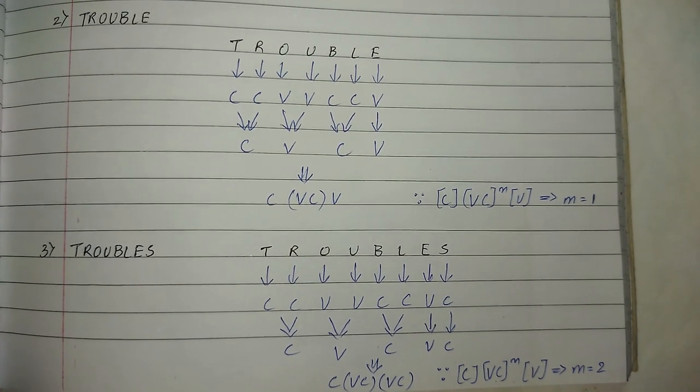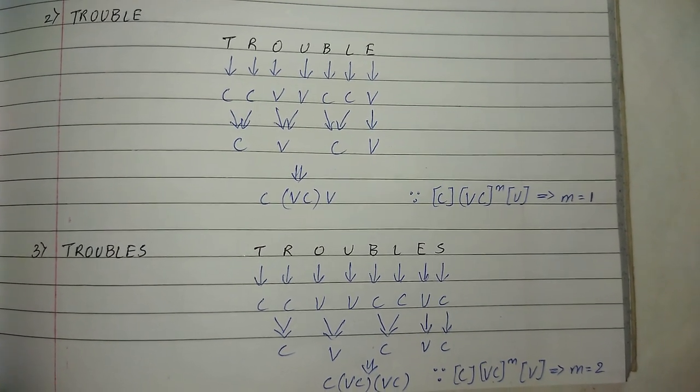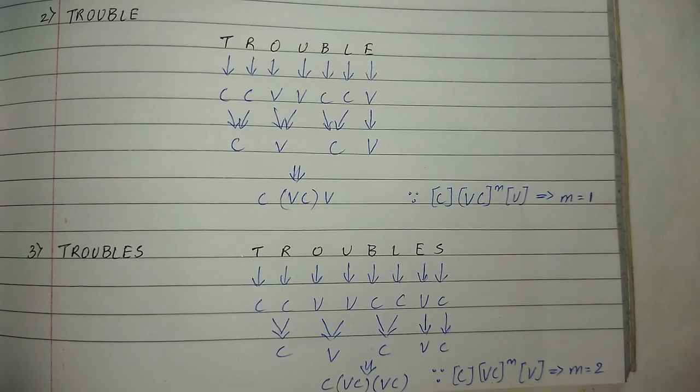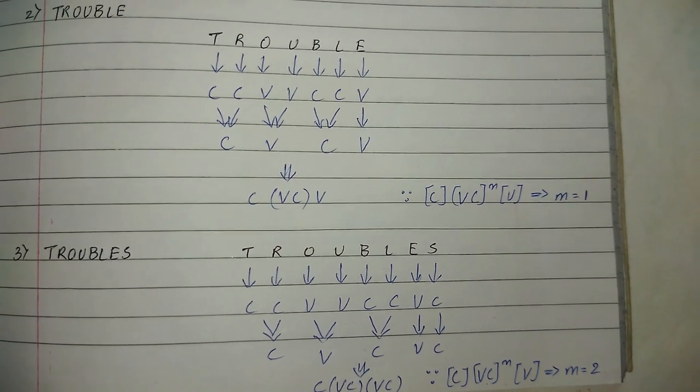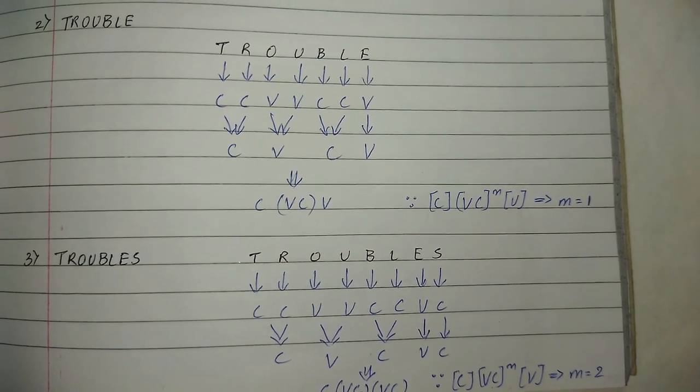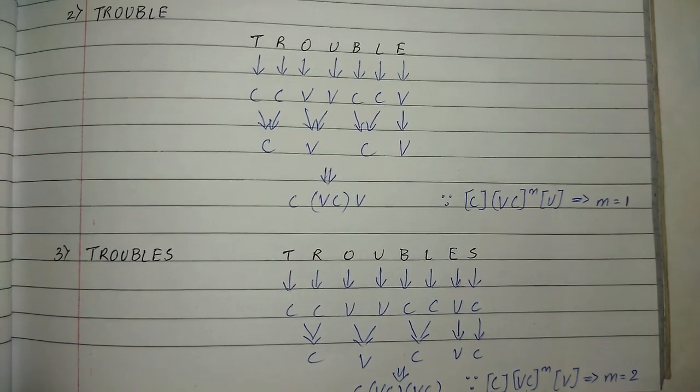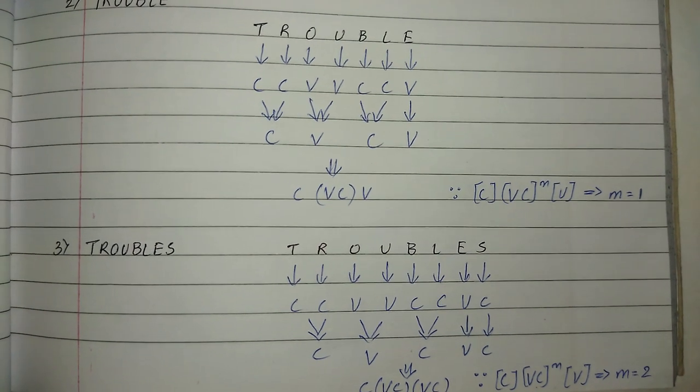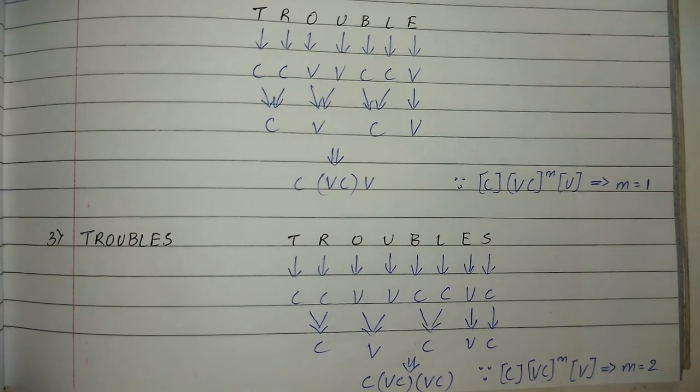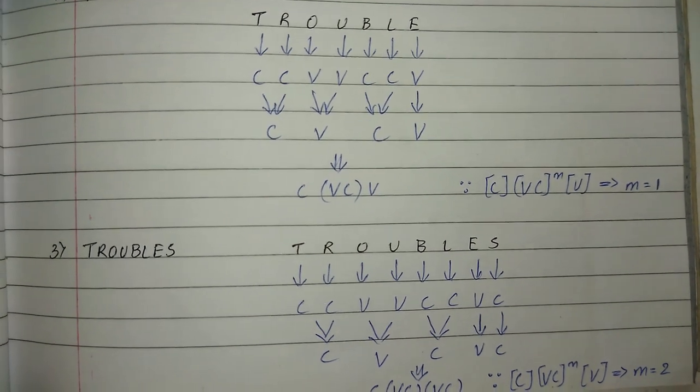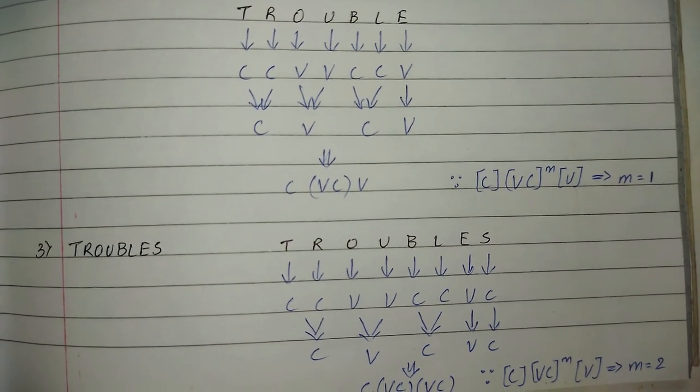Second example is TROUBLE. T is consonant, R is consonant, O and U are vowels, B is consonant, L is consonant, and E is vowel. Two consonants side by side are considered as single C, then we have two vowels, and again two consonants side by side considered as single C. We will see if there are any possibilities of double consonants or vowels side by side, simplify them further. If there aren't any, we consider that as the final output and compare it with the formula C, VC raised to m, V.